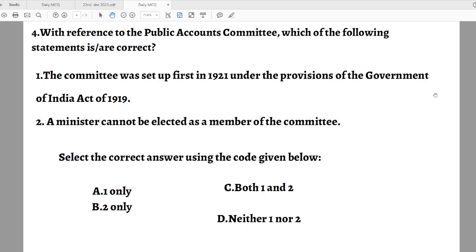Question number four with reference to the Public Accounts Committee, which of the following statements are correct? Statement 1: The committee was set up first in 1921 under the provision of the Government of India Act 1919, the Montagu-Chelmsford Act. Statement 2: The Minister cannot be elected as a member of this committee. Select the correct answer using the code given below. Options are: A. One only. B. Two only. C. Both. D. Neither.